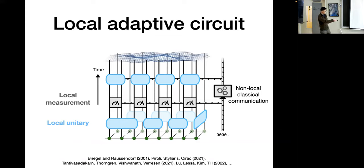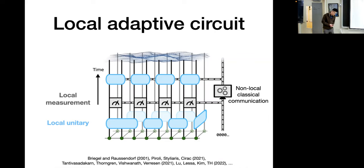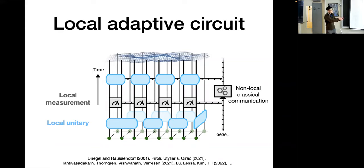The motivation for why we and many other people consider such local adaptive circuits is because they allow you to shortcut the preparation of long-range entangled states. If you have a quantum circuit that consists of purely local unitary gates, then there's a Lieb-Robinson bound which restricts how quickly that local unitary circuit can establish long-range correlation. With a local unitary circuit, you need depth or time of order system size to prepare any long-range entangled state, like a quantum critical point or topological order. However, with local measurements and non-local classical communication, this setting is beyond Lieb-Robinson. Local adaptive circuits are actually able to prepare long-range entangled states, like topological order, in order-one time, independent of the system size.